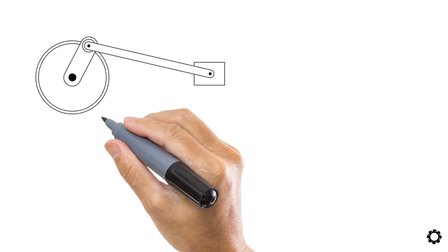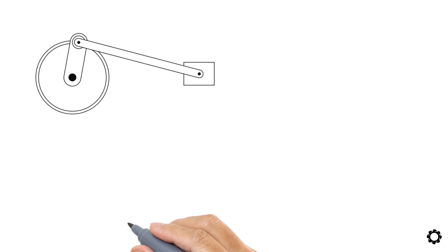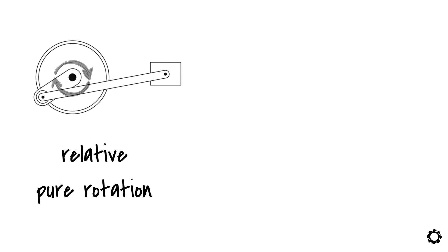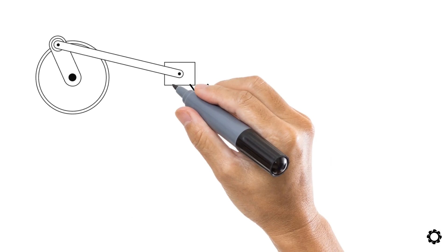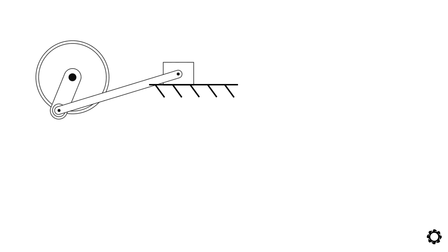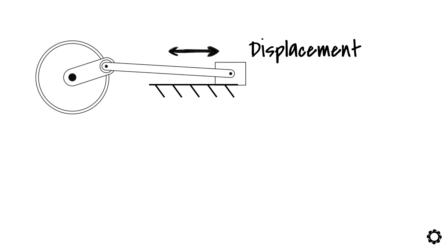You would use a type of constraint when you only want to allow a relative pure rotation of one body with respect to the other. Or you would use another type of constraint when you only want to allow for a displacement between one body and another.